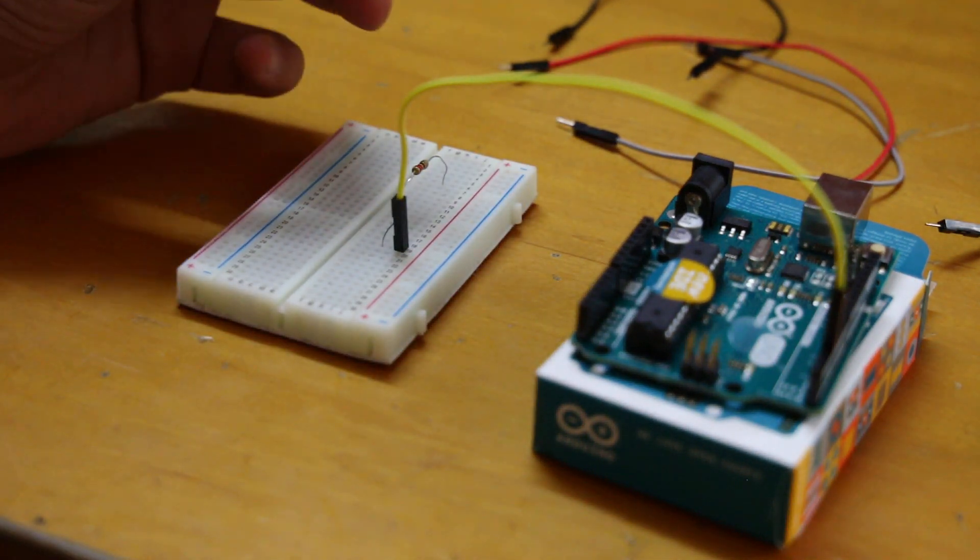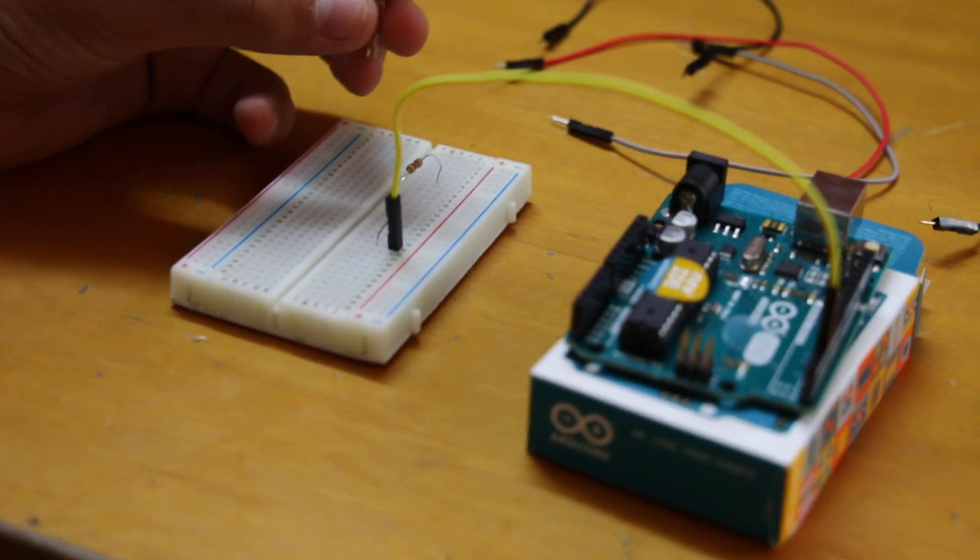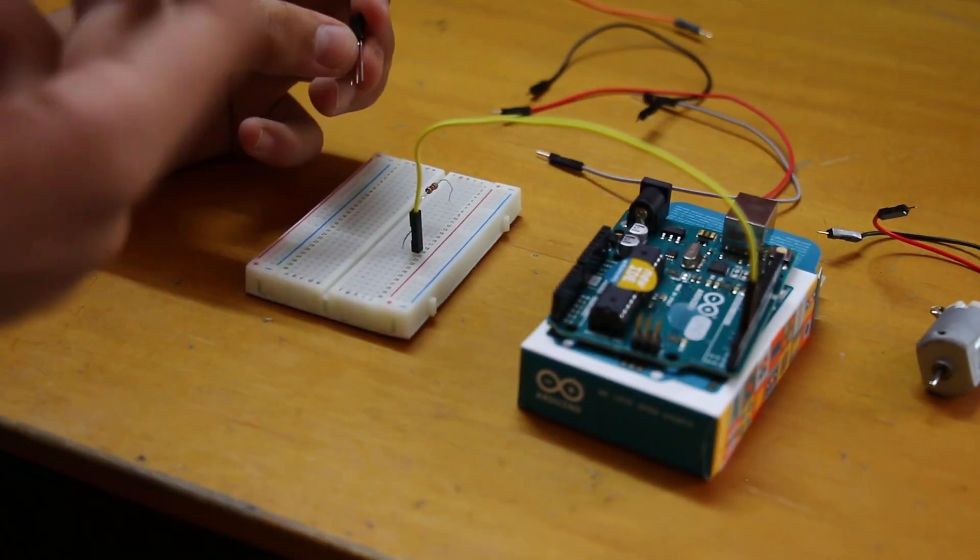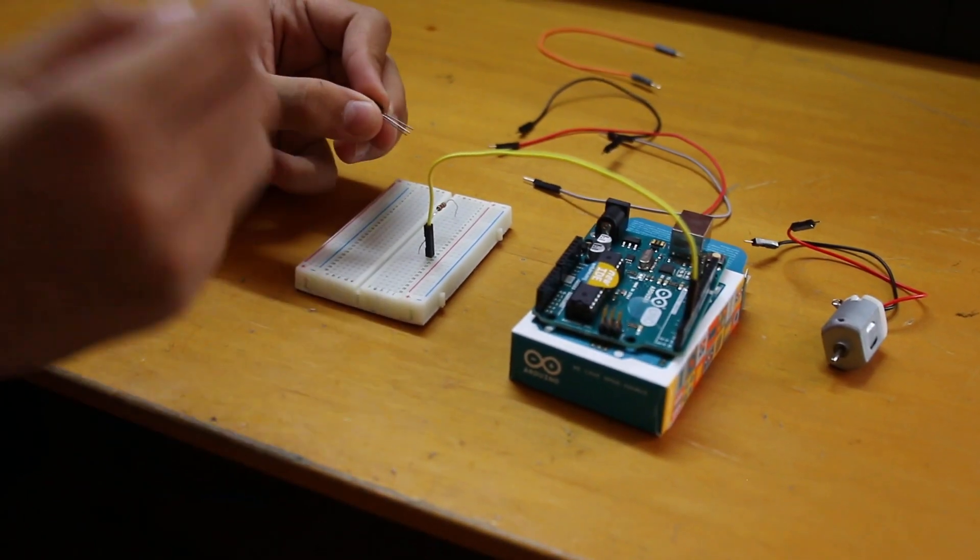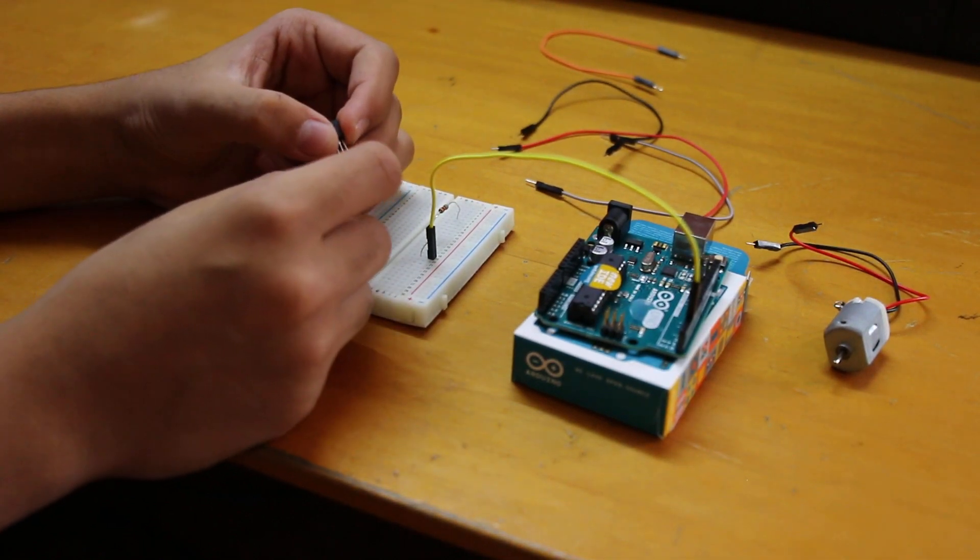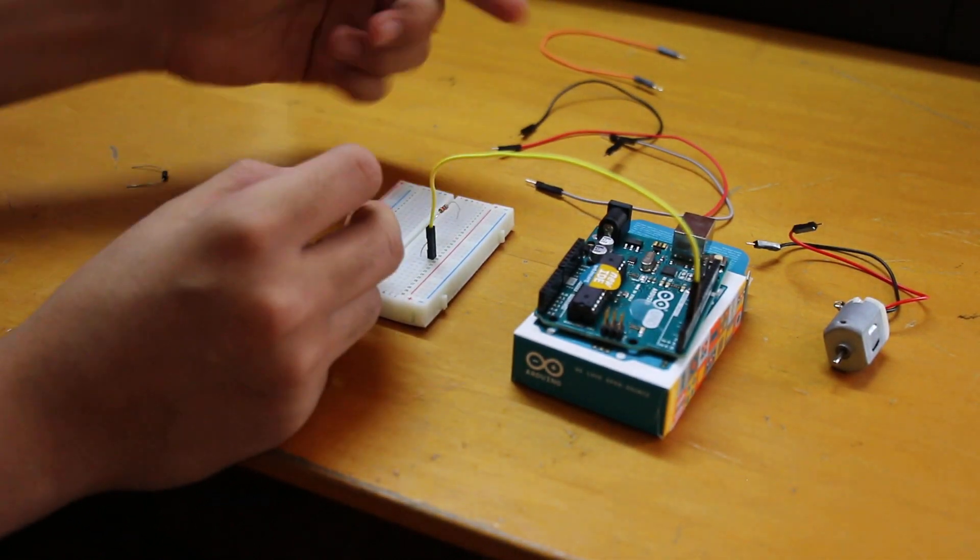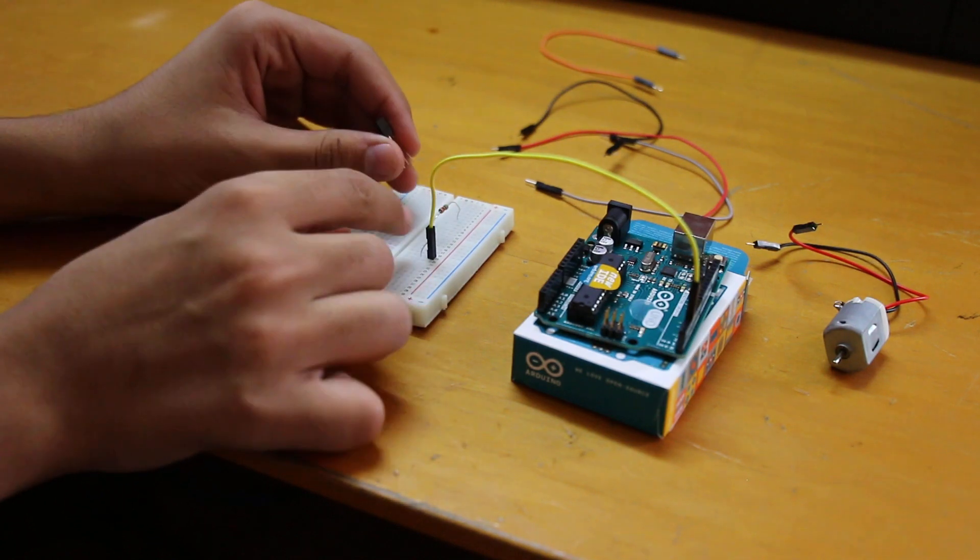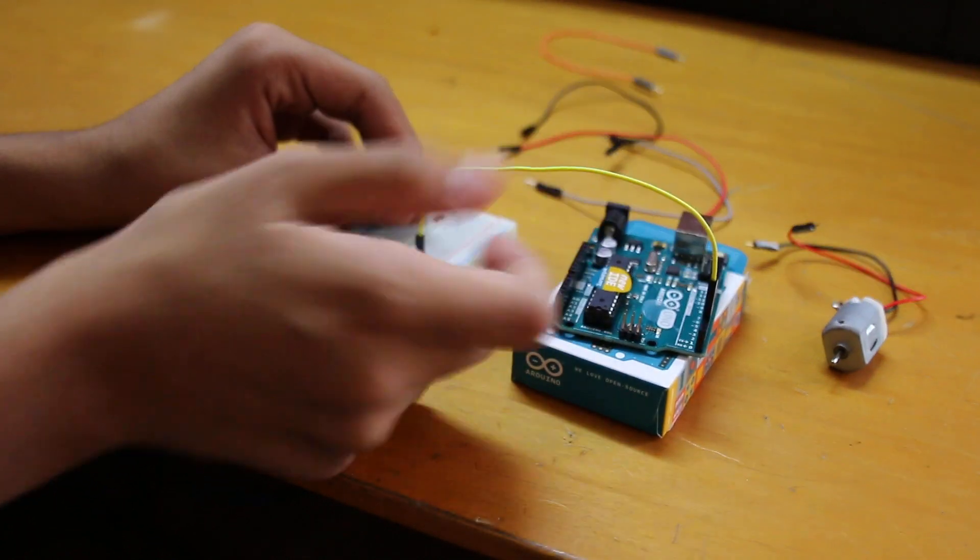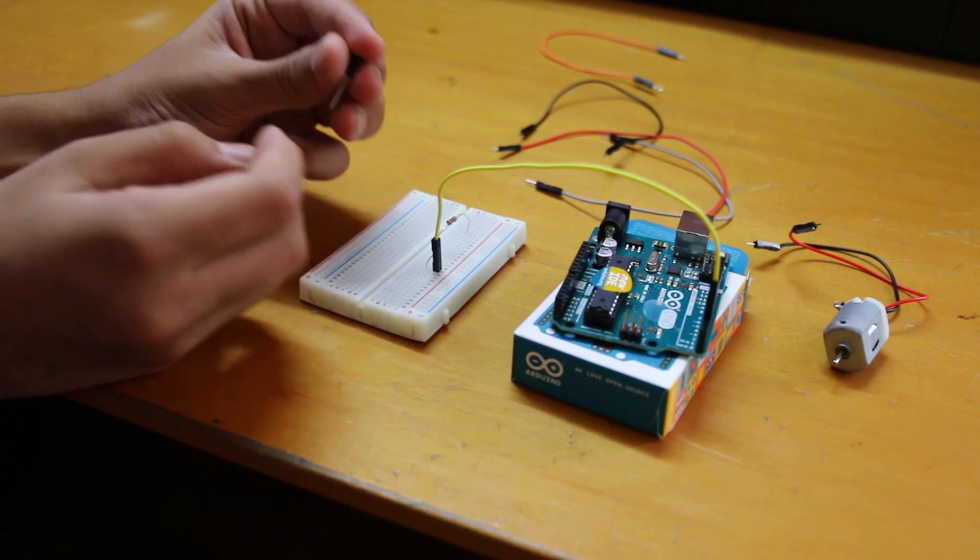So now we're going to be using the transistor. Basically what the transistor does, it receives the current to the base, and every transistor has different settings. There's a collector, base, and an emitter. So the emitter goes to the ground, collector is what outputs the voltage, and the base is what gets the voltage from this pin.